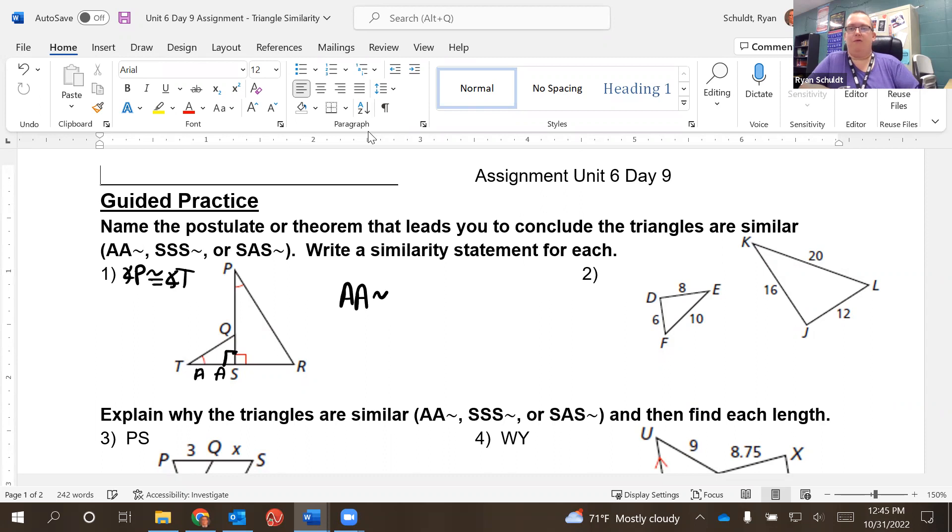And we could say triangle TSQ is similar to triangle. Let's see, I said TS and then Q. So start with P because they both have a mark in them. They go to S and then R. P, S, R.